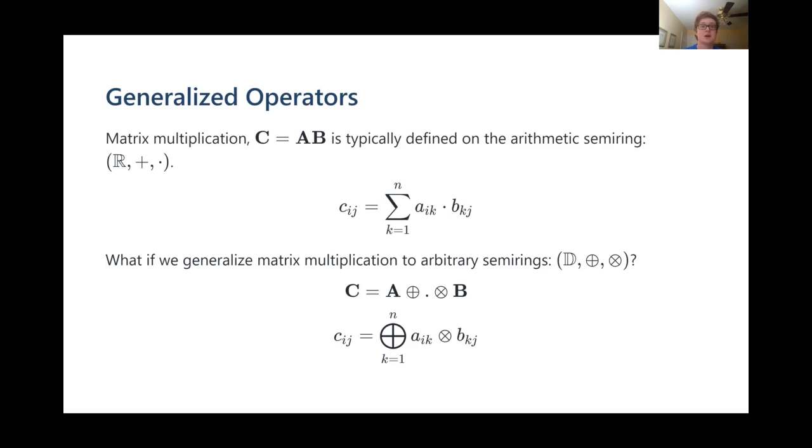While matrix multiplication is obviously immensely useful in its current form, we can express many more algorithms by generalizing the sum and multiply operators to arbitrary binary operators. In doing so, we move from the arithmetic semi-ring there at the top, which is, briefly, a semi-ring is a domain and two binary operators with some special properties, to an arbitrary semi-ring.